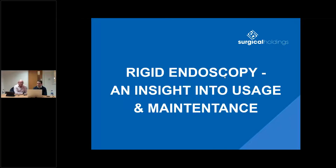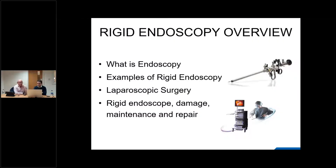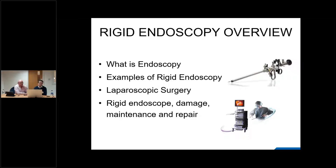This is really to look at rigid endoscopy and give you some background into where rigid endoscopes are used, and also some maintenance and repair issues. We're going to cover: explaining what endoscopy is, giving examples of rigid endoscopy, one example of laparoscopic surgery, and then look at the rigid endoscope itself in terms of damage and maintenance repair issues. We'll take questions at the end.